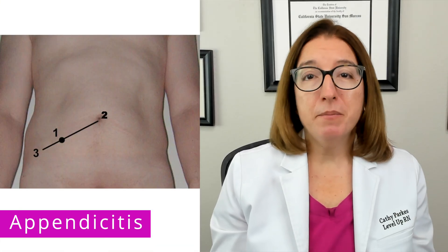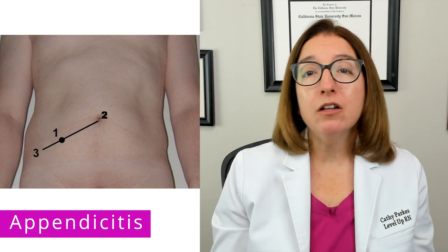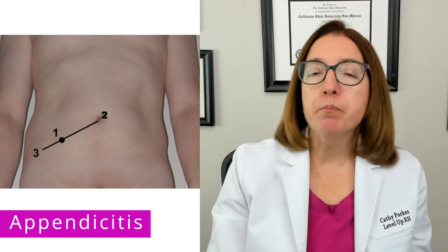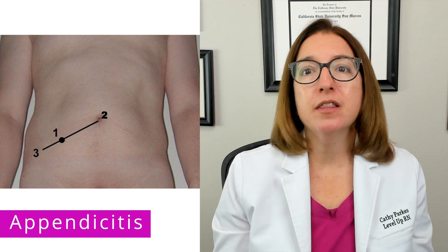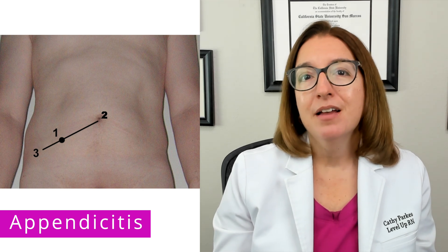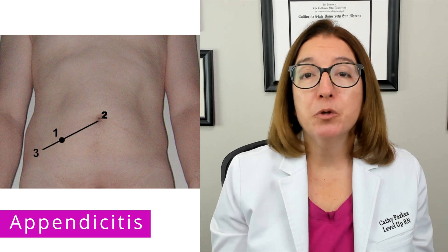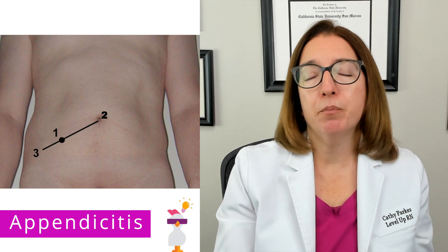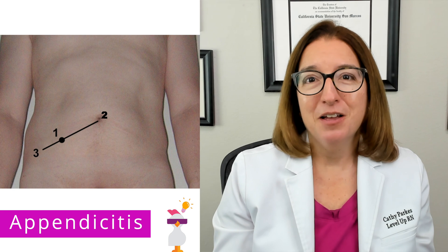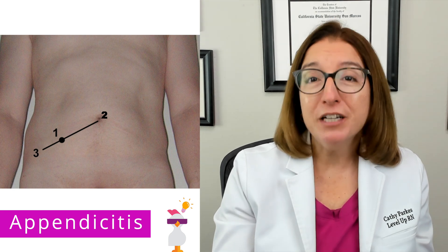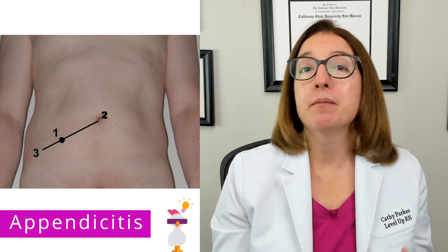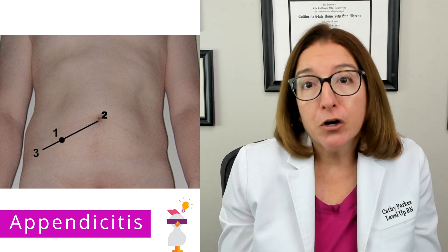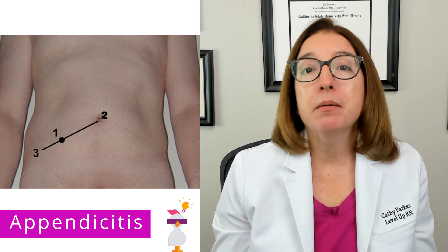The hallmark symptom of appendicitis is right lower quadrant abdominal pain at McBurney's point, which is shown in the image with a 1. Our cold chicken hint to help you remember this is: you really feel the burn with appendicitis. The R in 'really' helps you remember that the pain is in the right lower quadrant, and 'burn' helps you remember McBurney's point.